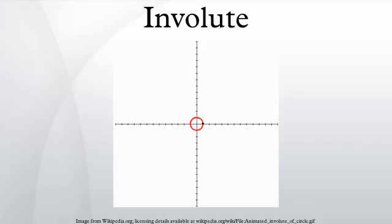Alternatively, another way to construct the involute of a curve is to replace the taut string by a line segment that is tangent to the curve on one end, while the other end traces out the involute.